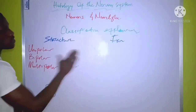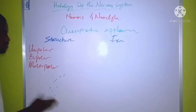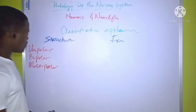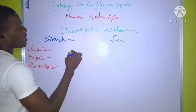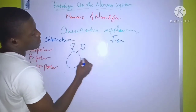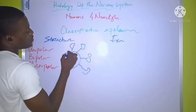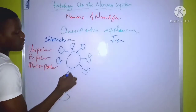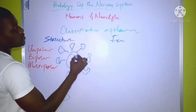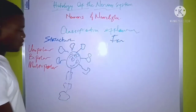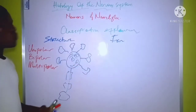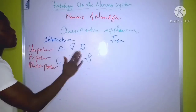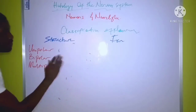The last one under the classification of neurons according to their structure is the multipolar neuron. The multipolar neuron is what we drew earlier — it has more than one dendrite extending from the neuron, along with a large axon extending from it with its myelin sheath. The multipolar neurons are found mainly in the brain and other structures of the nervous system, and they have their various functions.